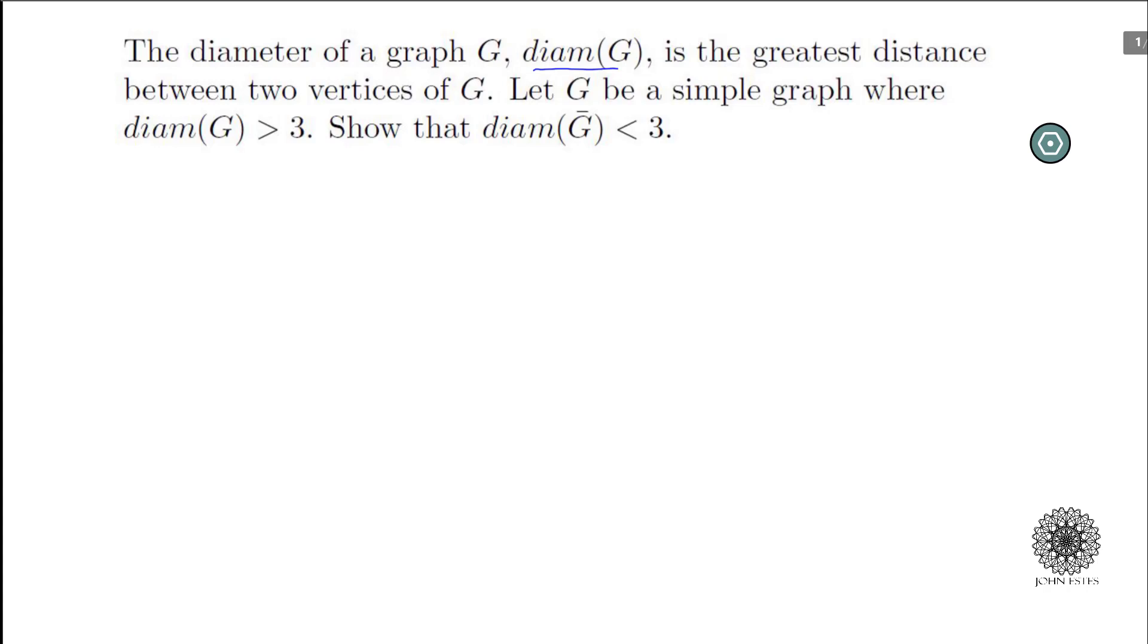Today I want to look at this interesting question in graph theory where we have the diameter of a graph, which I denote as diam(G), is the greatest distance between two vertices of G. And so here if we have a simple graph and the diameter is greater than 3, we want to show the complement has a diameter less than 3.